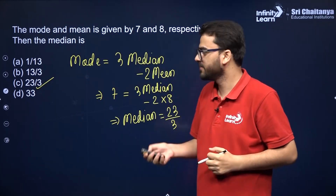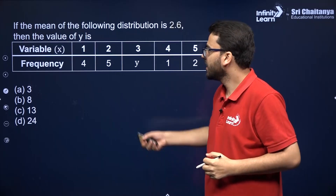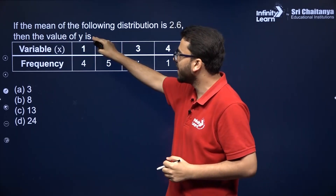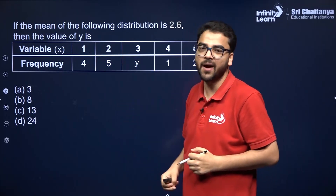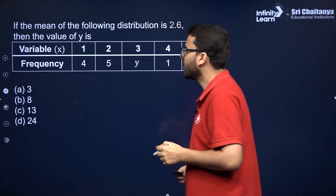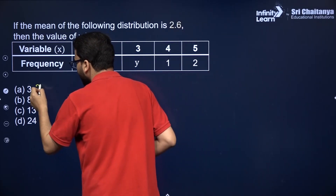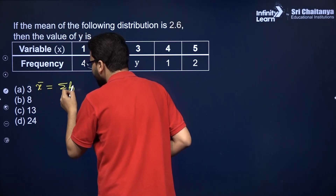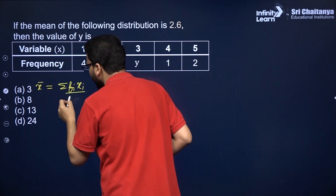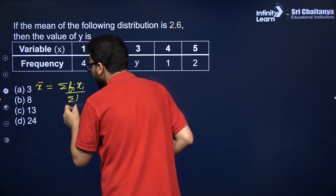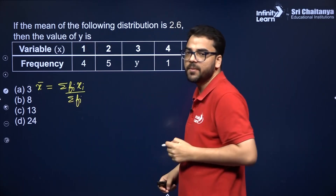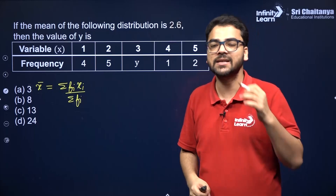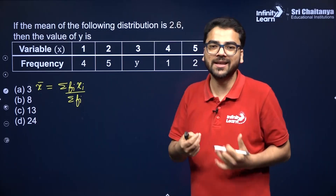Let's do the next question. The mean of the following distribution is given as 2.6, and we have to find the value of y. The formula to find the mean is: Mean = Σfi·xi / Σfi. Since this is not a grouped frequency distribution table, we are not using the assumed mean method or other methods.